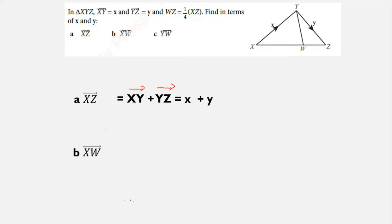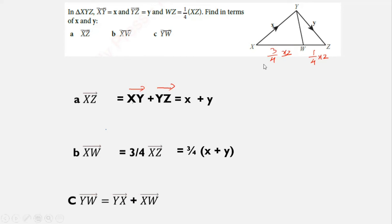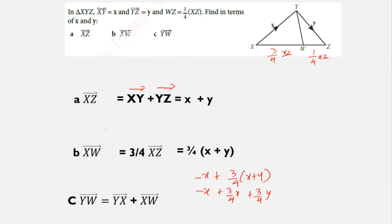Find vector XW = (3/4) of XZ. Why 3/4? Because WZ = (1/4) XZ, so XW takes the remaining 3/4. Total parts are 4. XZ = x + y, so XW = (3/4)(x + y). Find vector YW = YX + XW. YX is against the direction, so −x. XW = (3/4)(x + y). Expanding: −x + (3/4)x + (3/4)y. Taking LCM: (−4x + 3x)/4 = −(1/4)x. So vector YW = −(1/4)x + (3/4)y.